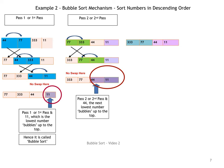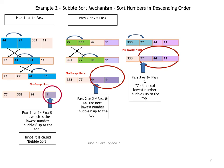Now let's look at the third pass. We start with 333, 77, 44, and 11, and we compare 333 and 77, asking: is 333 less than 77? It's not. So we write the array out again as it is — there has been no swap. We stop here because in the third pass the third lowest number, 77, is in place. After the third pass, all three numbers are sorted: 77, 44, and 11, and since this array has four numbers, by default the fourth number is also in place. The array is now fully sorted in three passes.